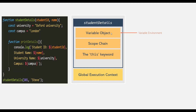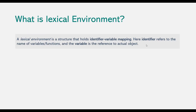Now let's talk about scope chain. A scope chain is a concept which tells which variables and functions the current scope has access to. And a scope chain is implemented by something called a lexical environment. A lexical environment is a structure that holds identifier-variable mapping, where identifier refers to the name of the variable or function, and the variable is the reference to the actual object — which can be a function, an array, or even a primitive value.